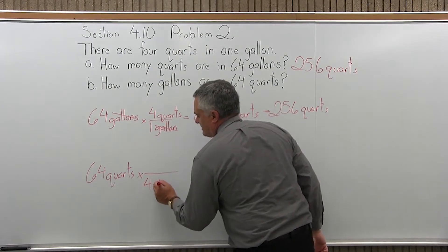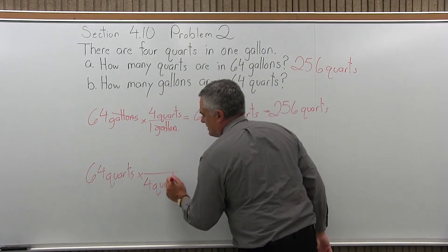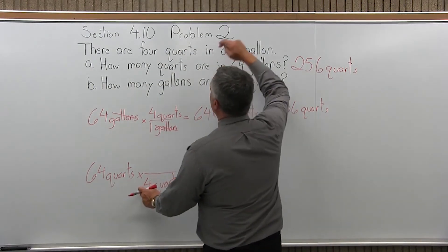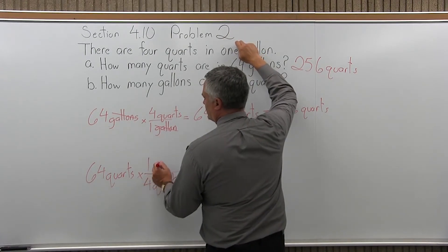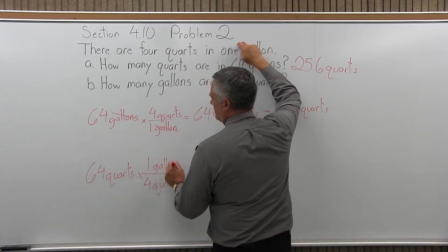So we have 4 quarts. 4 quarts is equivalent to 1 gallon. That goes in the numerator. That's going to give us the units that we're asked to convert to.